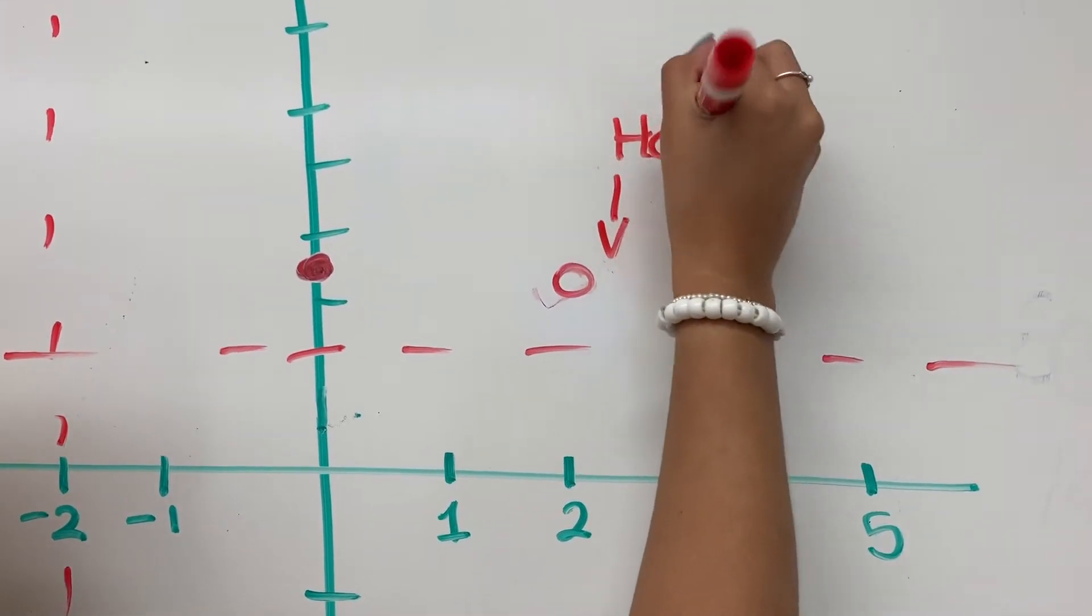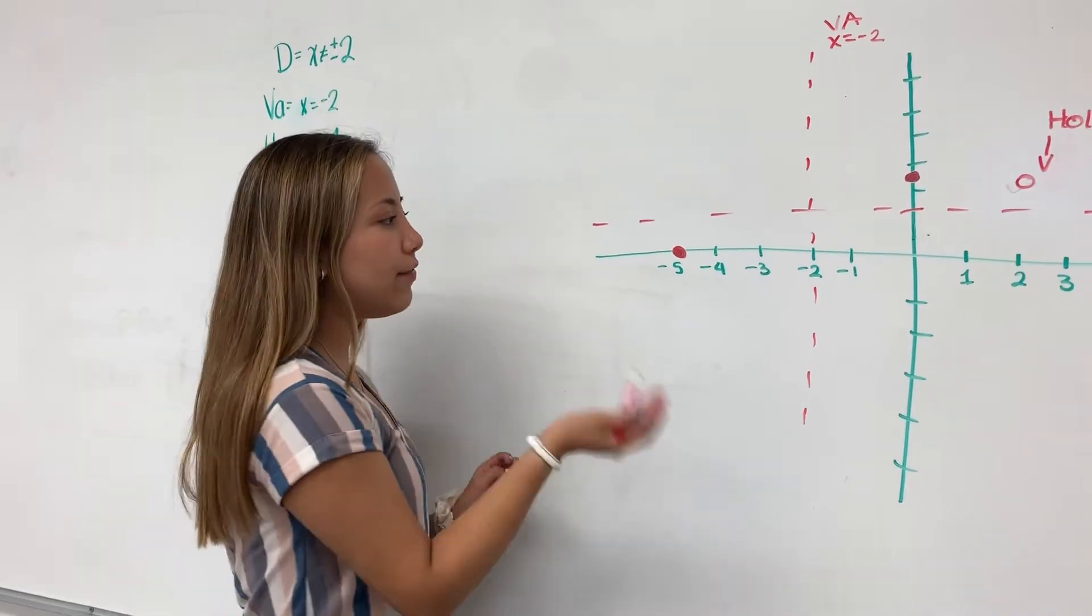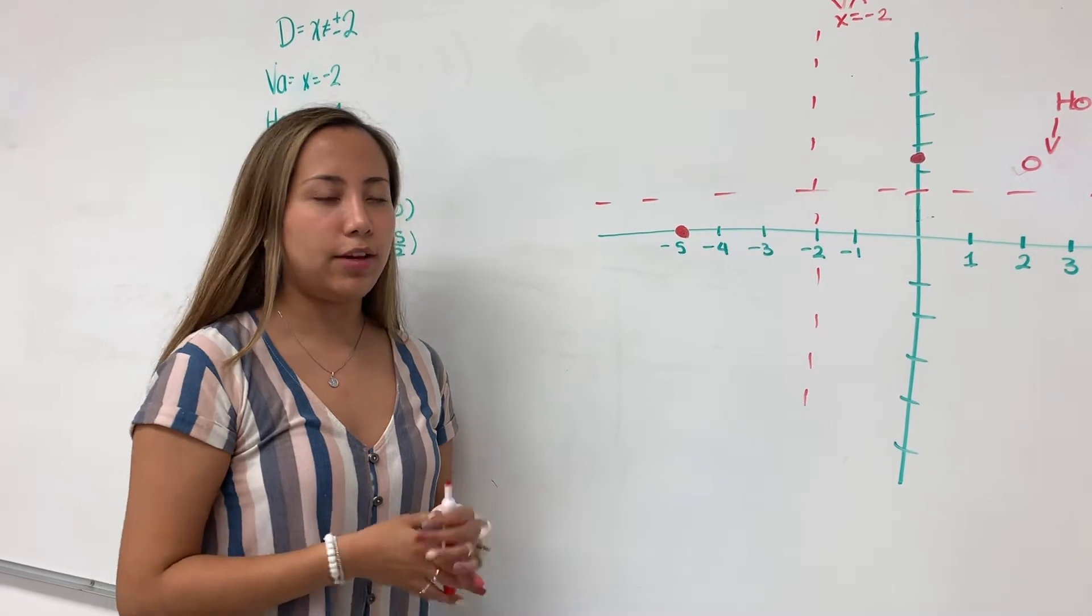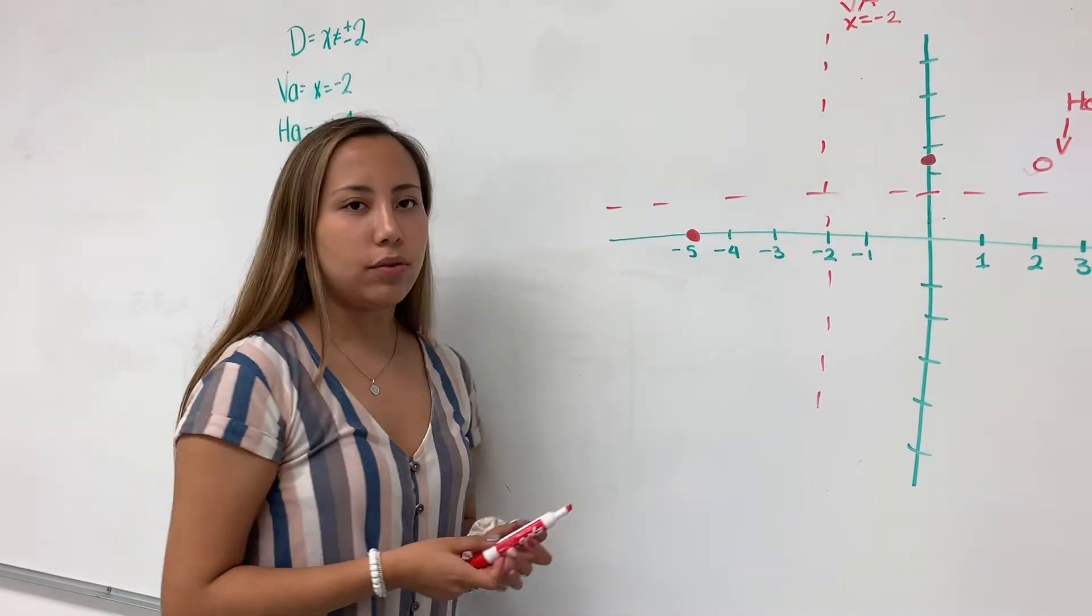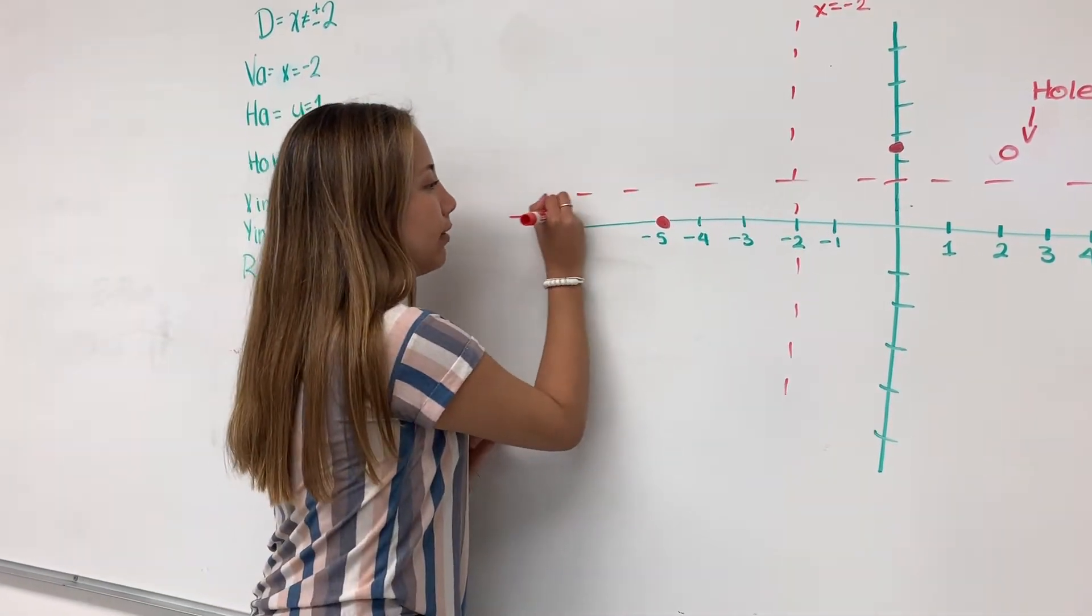And for graphing the lines, you can use a table of values. But since we already know the shape of this graph, it will go like this.